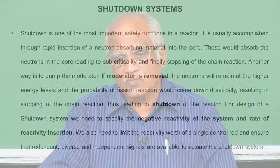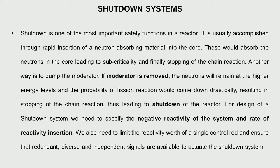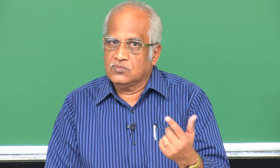Now we will go through examples, primarily of pressurized heavy water reactors which are the mainstay of our nuclear power program today, though other reactor types have similar systems. For shutdown systems, they must have neutron absorbing materials. When control rods containing neutron absorbing material are inserted, the neutrons are absorbed and finally no neutrons remain available for fission, stopping the chain reaction. The absorber rods made of boron or cadmium will absorb and stop the chain reaction.